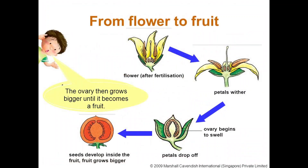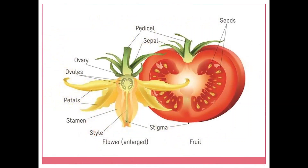Now the zygote is formed — let's see what happens after that. After fertilization, the petals wither, meaning the petals start falling. The ovary begins to swell and seeds develop inside the fruit as it grows bigger and bigger. Can you see the difference here? The flower, once pollinated, had its ovaries start growing and finally developed into a fruit. The fruit is now fully grown with seeds inside it, and these seeds are used to grow new plants. With this we can conclude that pollination is important for a flower to develop into a fruit.